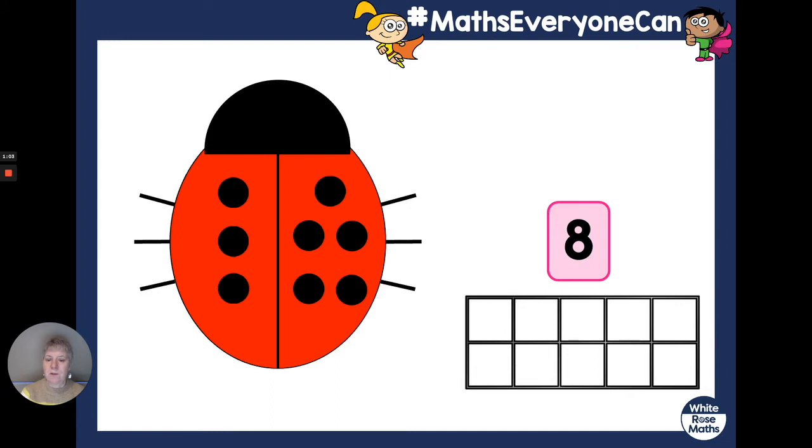And how many are there on the other side? Do you count them? Well done, there are five. Can you put three counters and five counters onto your ladybird? Again, pause the video if you need to while you do it. Okay, now we've got all the counters on our ladybird. We've got three counters and five counters.